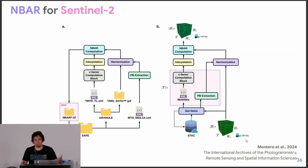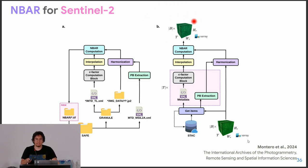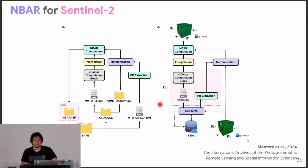For data cubes computed or extracted via STAC, if we have a data cube with multiple bands, multiple time steps, and a specified bounding box, we can use this data cube to go into the STAC catalog where it was created from and get the metadata. We do the computation of the C-factor for all the time steps, extract the processing baseline to harmonize the data cube first, and then do the interpolation of the C-factor for the NBAR computation — for the entire data cube according to its resolution, reference system, and bands. All of this is computed using X-array, and if you have it as a lazy array with Dask, it can be computed in parallel.